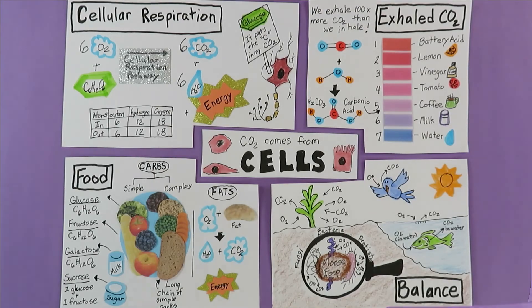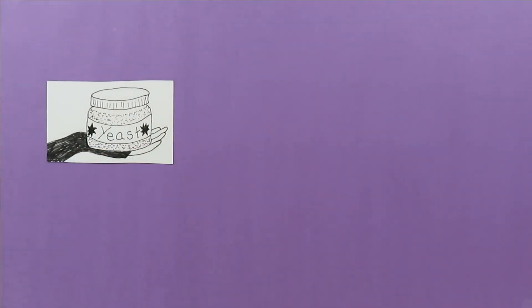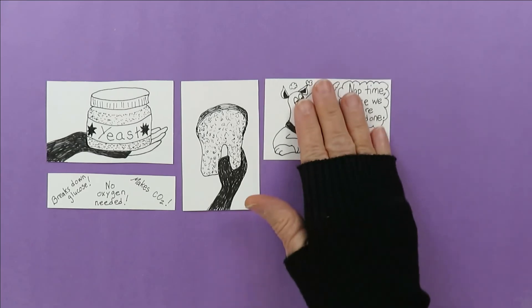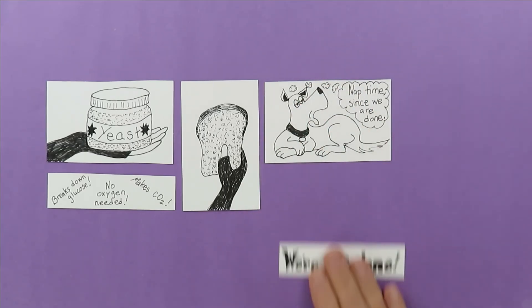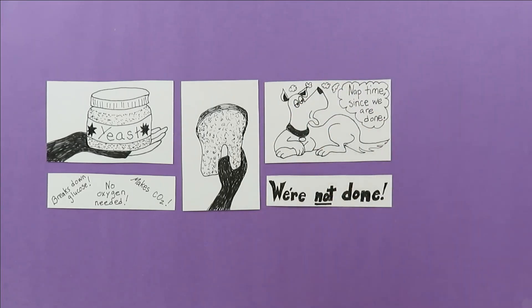Of course, cellular respiration isn't the whole story. Some cells, like yeast, for example, can break down food to get usable energy without any oxygen. They get less energy, and they make less CO2 from a glucose molecule. But it works for them. And we like it because that CO2 makes our bread fluffy. Wait! Don't fall asleep. We've barely scratched the surface of where CO2 comes from.